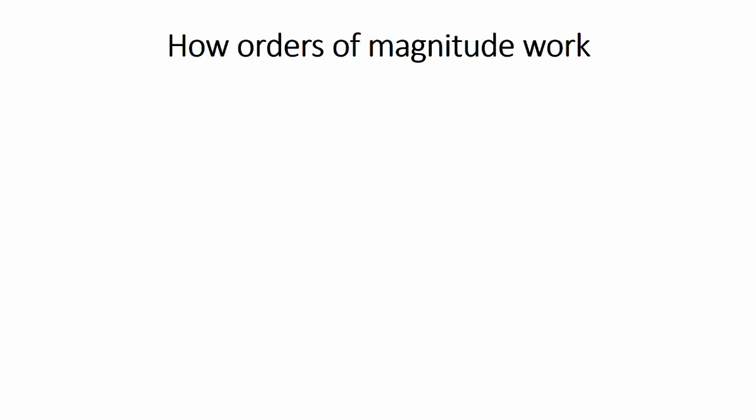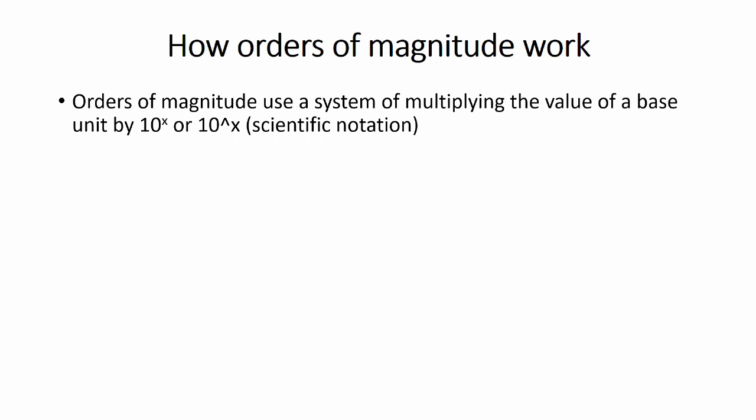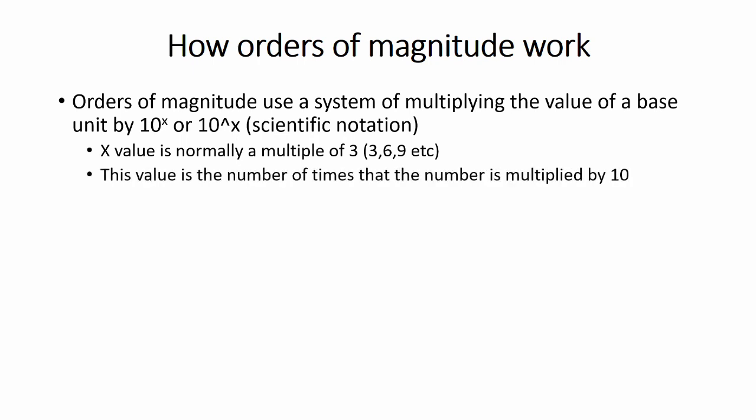These magnitudes use what is known as scientific notation to display numbers. This essentially multiplies the number by 10 a certain number of times. This is kept track of by adding times 10 to the power of x after the number, with multiples of 3 often being used for this x value in biology and other sciences. This x value is the amount of times the number has been multiplied by 10. As an example, we will look at a kilometre. We know that a kilometre is 1000 metres, and this number can be obtained if we multiply 1 by 10 three times.